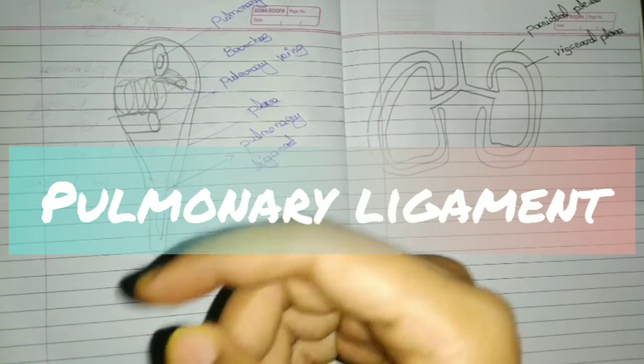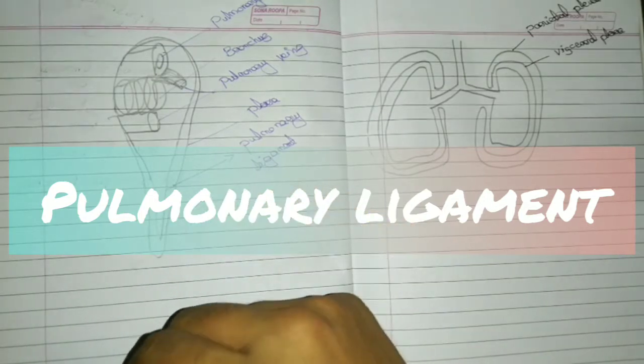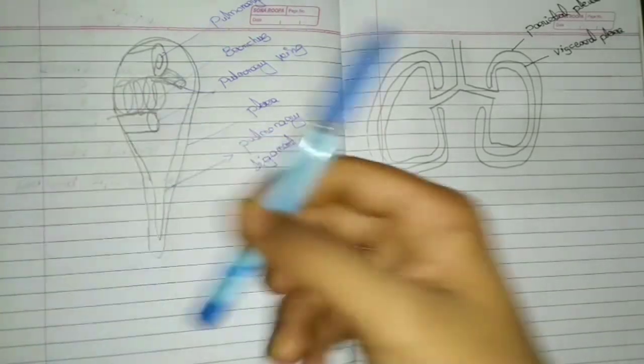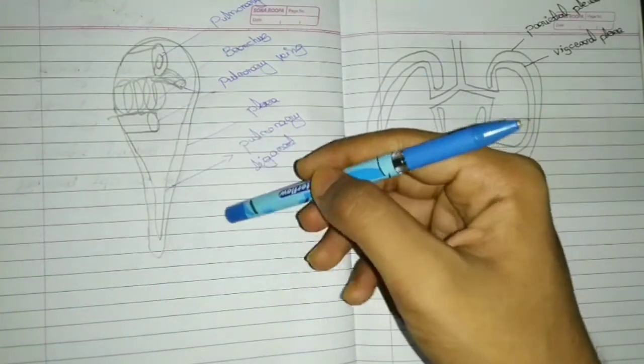This is the pulmonary ligament. Pulmonary ligament is the pleura. It surrounds the root of the lung.